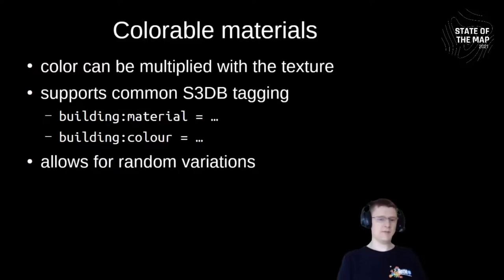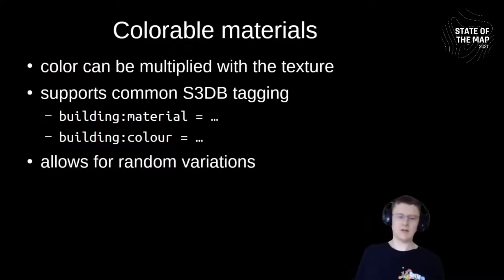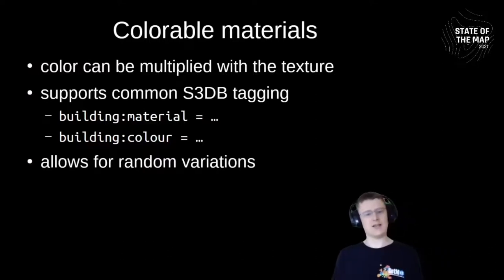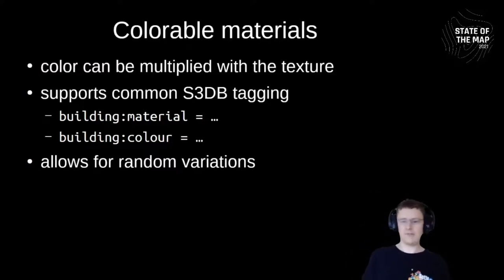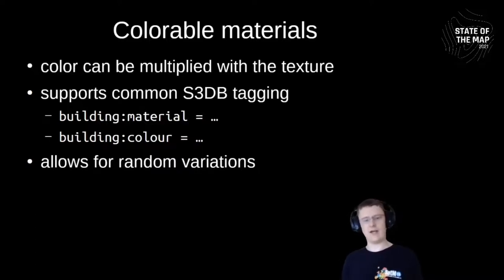Another detail of the PBR implementation is support for colorable materials. Like many PBR pipelines, OSM2World multiplies a color value with a base texture. This is necessary to support Simple 3D Buildings tagging where material and color are separate tags, yielding many combinations that can't realistically be represented with individual textures like red plaster, green plaster, etc. Instead, a single plaster texture is multiplied by the exact tagged color, and this also allows random color variations when no specific color tag exists.